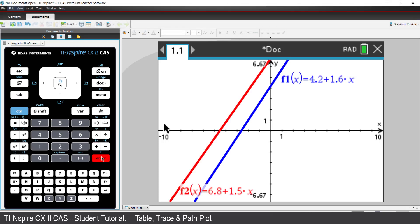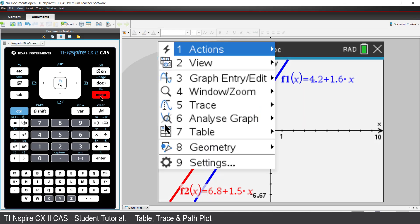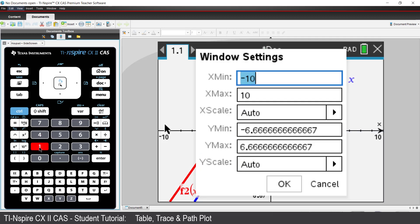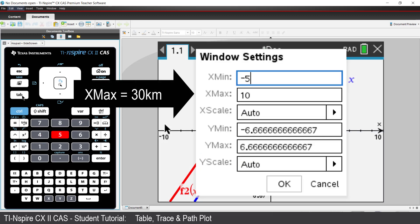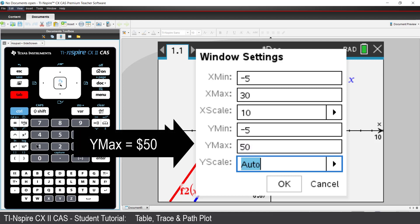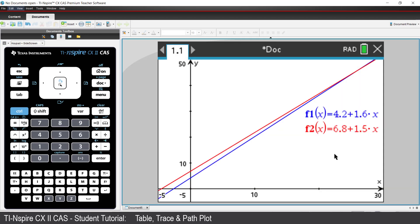If we are interested in distances up to 30 kilometres, then we need to adjust the window settings. For that sort of distance, we'd expect a fare of approximately $50. The graph shows the relationship between price and distance for the two options.